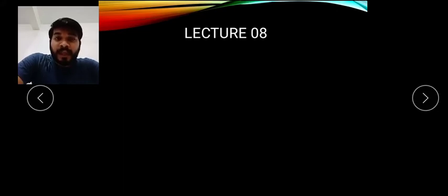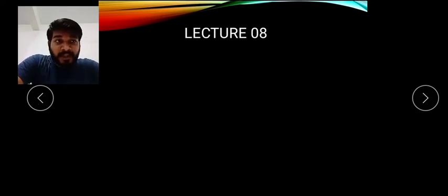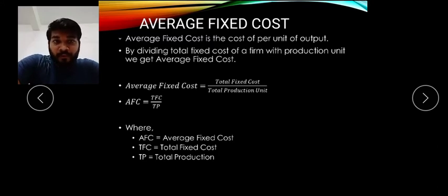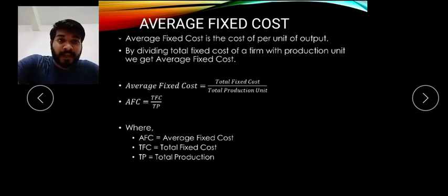Today we are going to learn about average fixed cost. We already learned about fixed cost; now we are going to learn about average fixed cost. So your average fixed cost is the cost per unit of output — that is, how much fixed cost is incurred per unit produced, found by dividing total fixed cost.